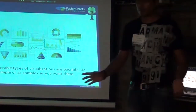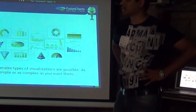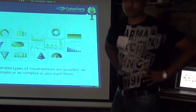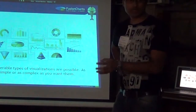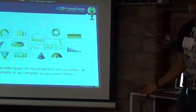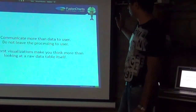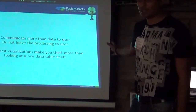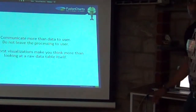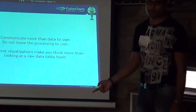There are 250-plus known chart types, and if you go to sites like Flowing Data or infosthetics.com or datavisualization.ch, every new set of data has a different kind of visualization. But remember that any complex visualization will need domain knowledge to understand the data — that is two steps away from your data, not one. Do not build very complex visualizations unless you are absolutely sure about your audience. The key rule is: communicate more than data to the user — do not leave the processing to the user. If the user has to process the visualization, they might as well look at the raw data.